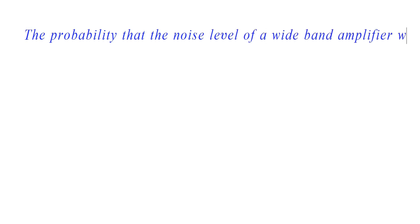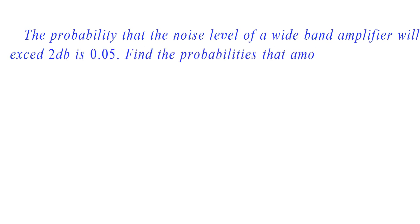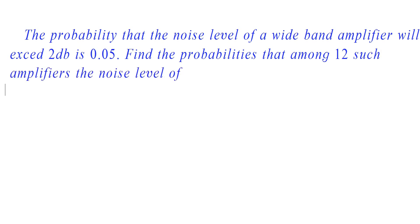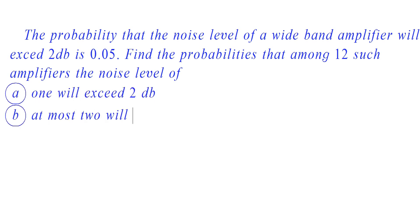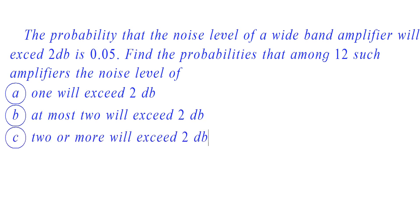Hello friends, in this section we learn to solve problems in binomial distribution. Here in this question, the probability that the noise level of a wideband amplifier will exceed 2 decibels is 0.05. Find the probabilities that among 12 such amplifiers: the noise level of 1 will exceed 2 decibels; at most 2 will exceed 2 decibels; and 2 or more will exceed 2 decibels.